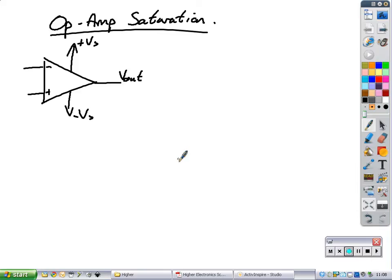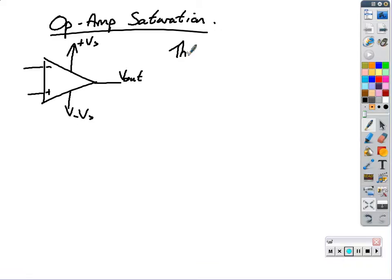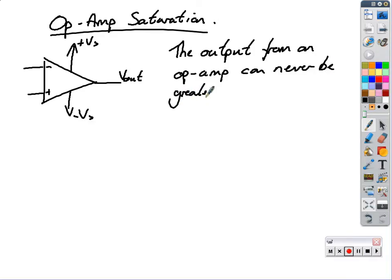So there's your op-amp there, plus and negative voltage supply, and there's your Vout. The output from an op-amp can never be greater than the supply voltage.